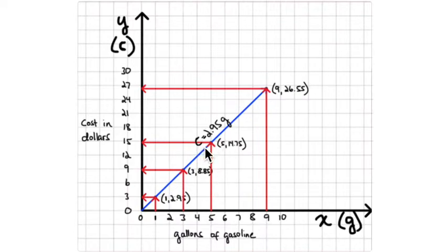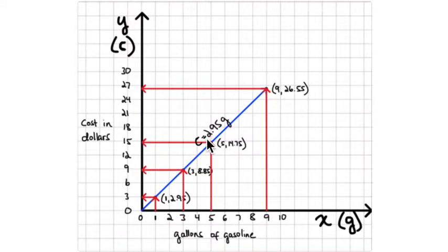The equation that goes with the graph is: cost equals two dollars and ninety-five cents times the number of gallons. The x-value is gallons — the independent variable — and what you calculate from it is the cost, which is dependent on the number of gallons purchased. The x-axis is gallons of gasoline and the y-axis is cost.